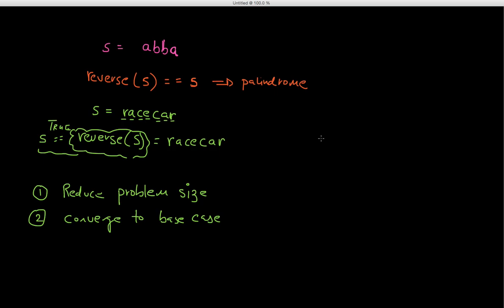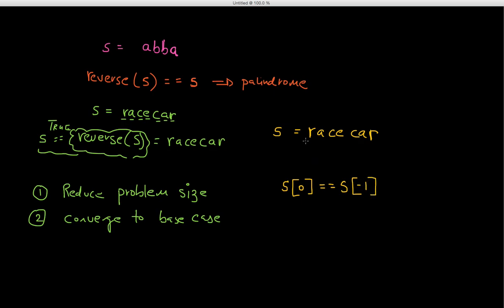Let's take our string s again — 'racecar', r-a-c-e-c-a-r. My solution is going to be really simple. I'll implement it so that if s[0] is equal to s[-1] — the first character and the last character are equal — that doesn't by itself mean it's a palindrome, but it's the first condition.